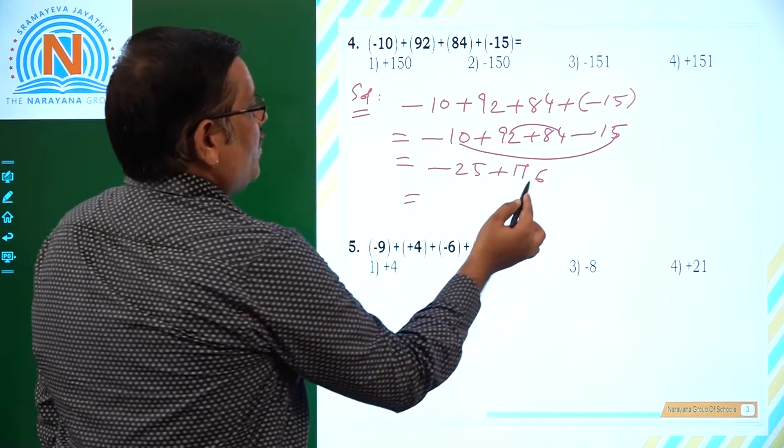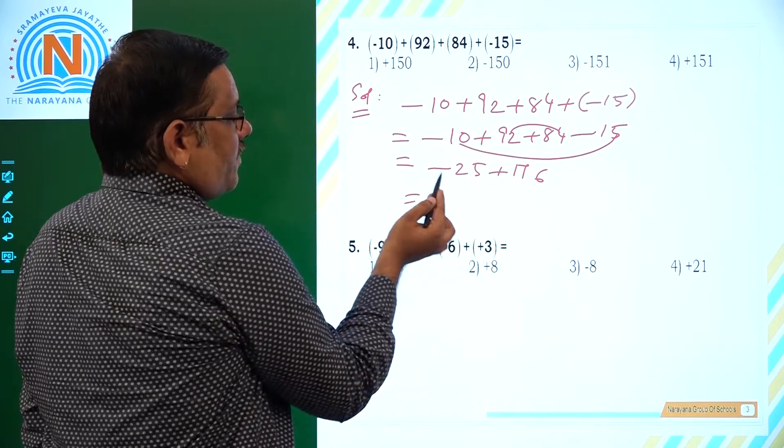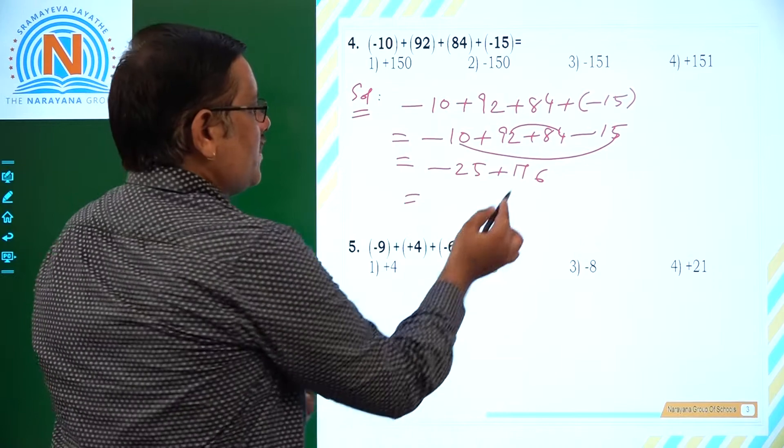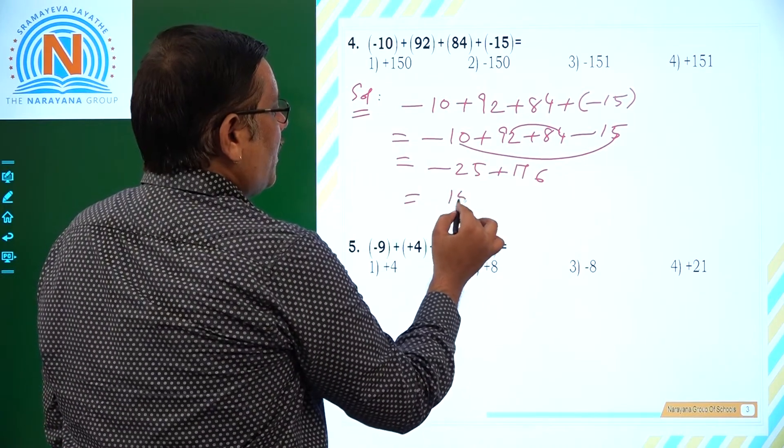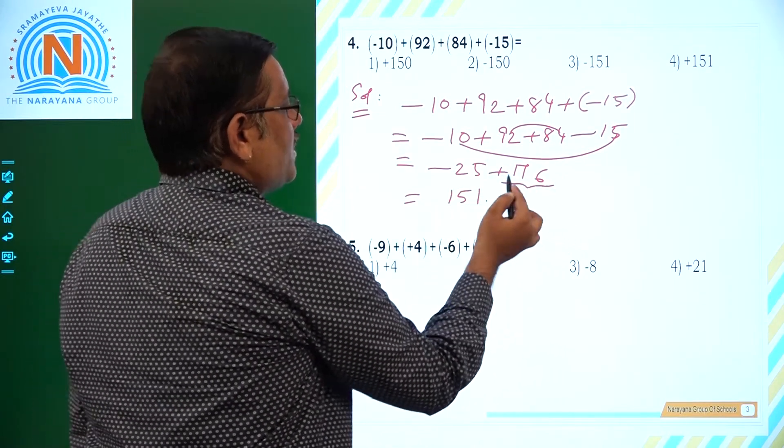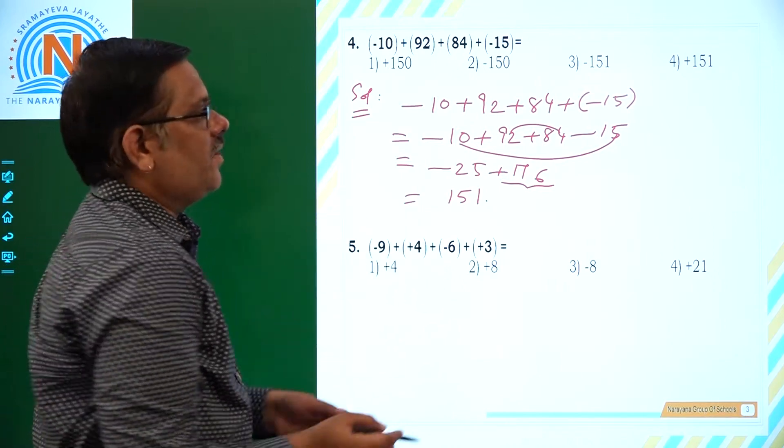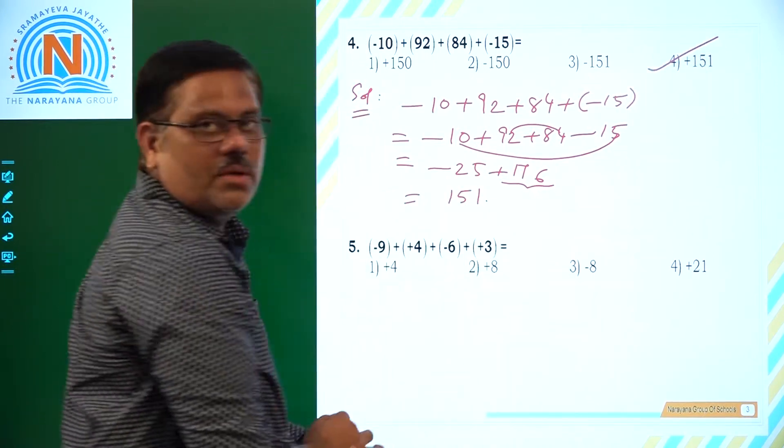176 - 25. We have to subtract, because one is plus, other one is minus. Subtract means 176 - 25 is nothing but 151. Larger number has positive sign. So it is positive 151, that is nothing but fourth option.